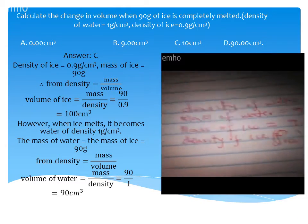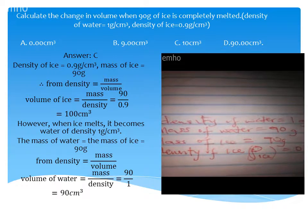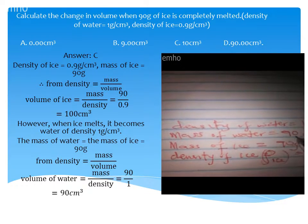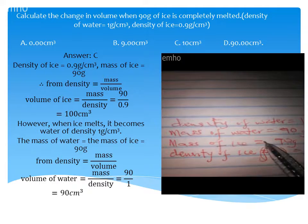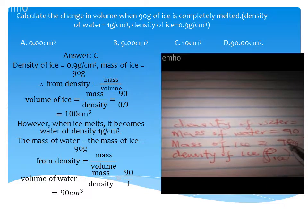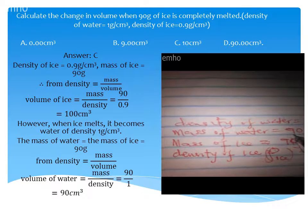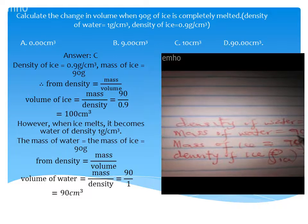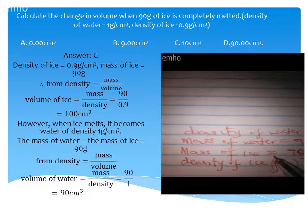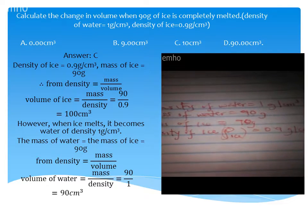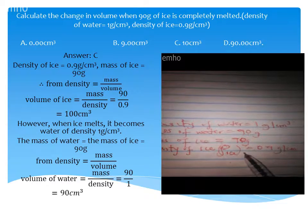The following parameters are already given in the question. We have the density of water, which is given as 1 gram per cm³. We also have the mass of water, which is 90 grams. Although this is not explicitly stated, we know that when the mass of ice is given as 90 grams, if the ice melts into water, the mass of ice is also going to be the mass of water. So the mass of water is also 90 grams. The density of ice is given as 0.9 gram per cm³.